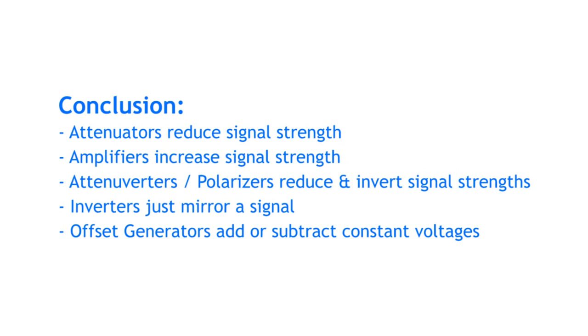Inverters simply invert or mirror a signal. Offset generators add or subtract a constant voltage to or from a signal.